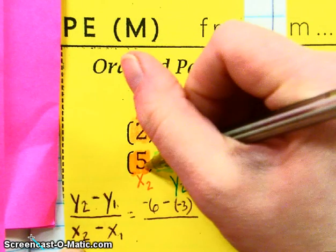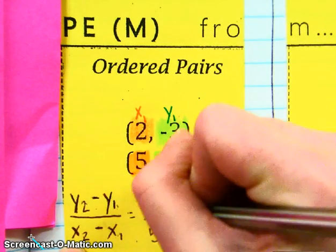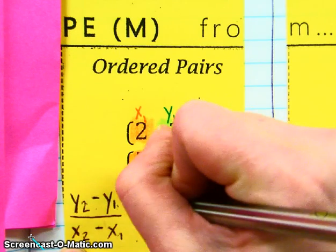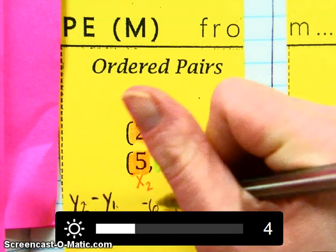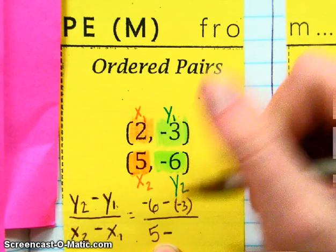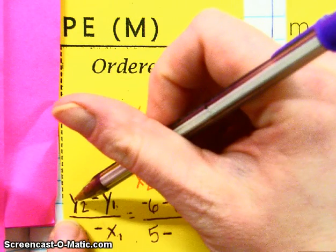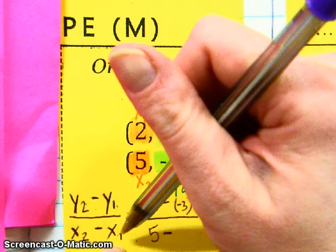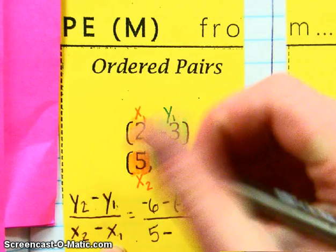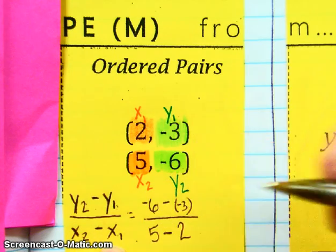Over X sub 2, so here's 5. Notice that the 6 and the 5, the negative 6 and 5 were in the same ordered pair, the second one. We're still subtracting because we're finding the difference, the change. Minus X sub 1, which was 2.